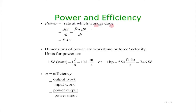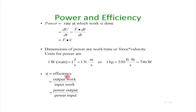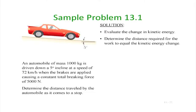Power is defined as dU/dt, the rate at which work is done. Since dU/dt = F·(dr/dt) = F·v, power equals F·v. Efficiency is the ratio of output work to input work. For example, a motor consumes electricity (input energy) and performs mechanical work (output energy). The ratio of output to input is the efficiency of the system.